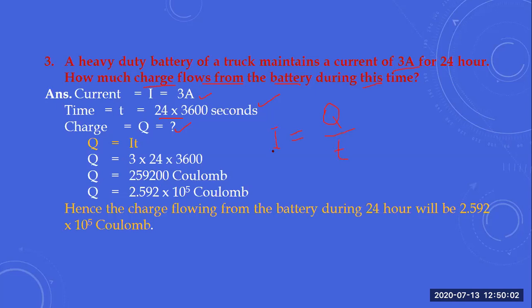If you know how much current passes and the time interval is given, you can calculate how many charges were passing. The technique used is Q = I × T. We multiply the current by the time converted into seconds. The result is 259,200 coulombs — these are the number of charges which have passed when the current is maintained at 3 amperes for 24 hours.